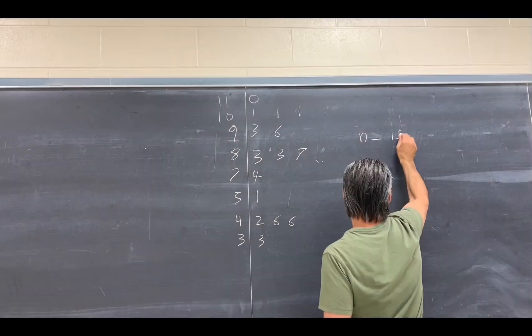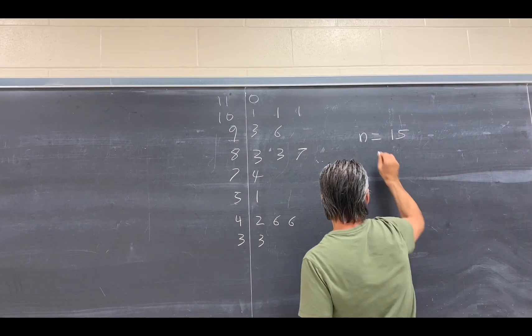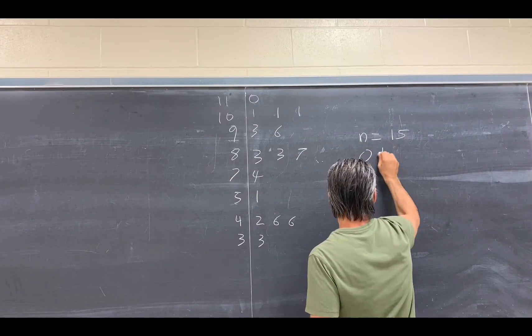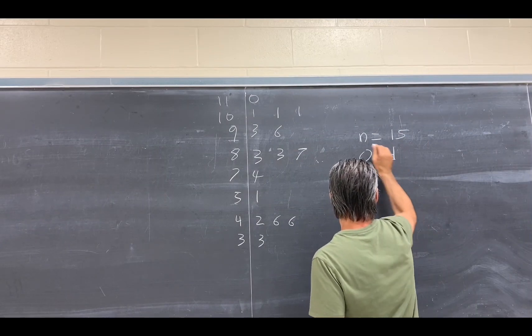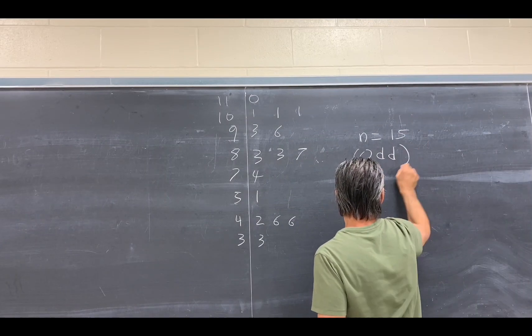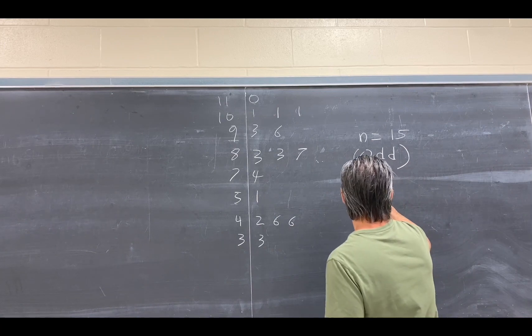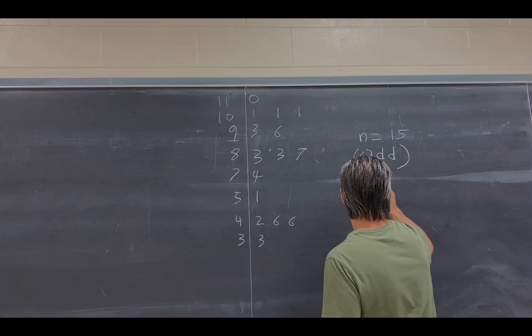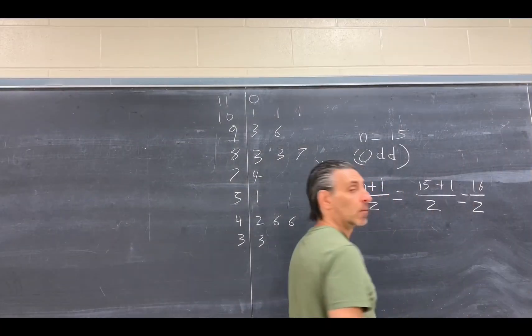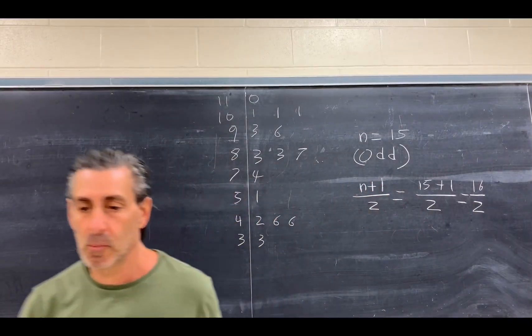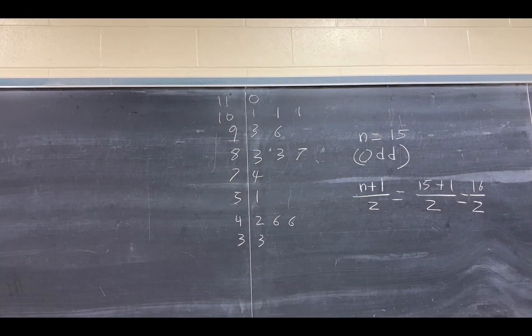I count up the sample size and show them the median formula based on whether the sample size is odd or even. Using the test scores, they pick this up right away also. Why? Because the data means something to them.